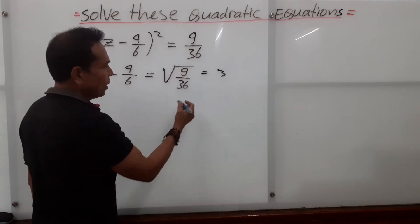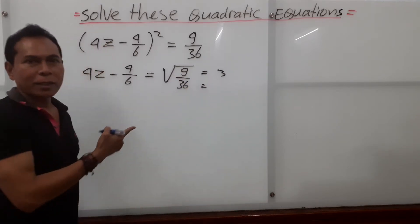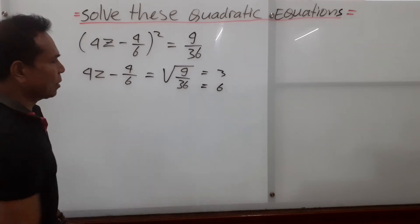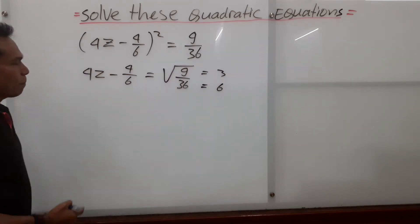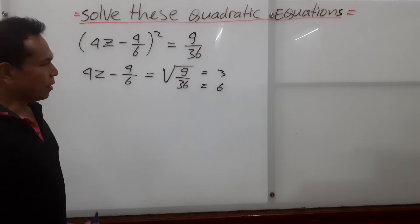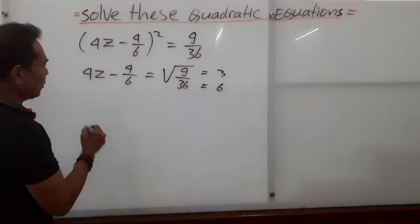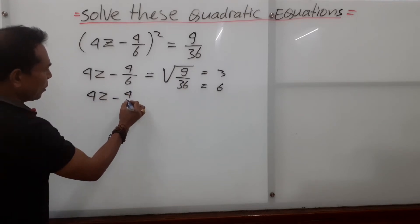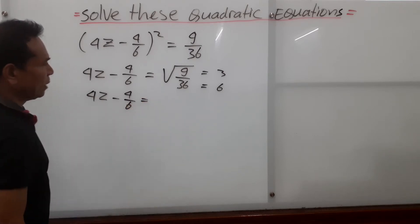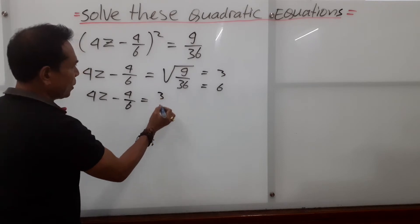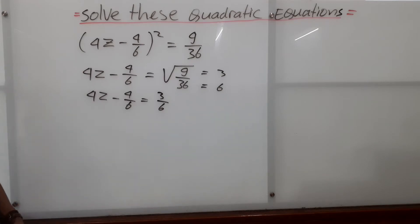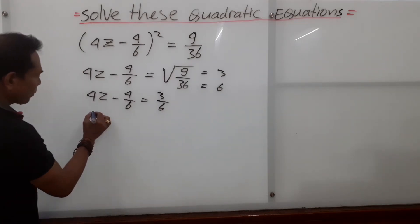Now we know the square root of 9 is 3, because 9 is a perfect square. And the square root of 36 is 6, because 36 is also a perfect square — both numerator and denominator are perfect squares. So we have 4z minus 4 over 6 equals 3 over 6.